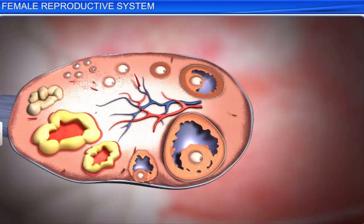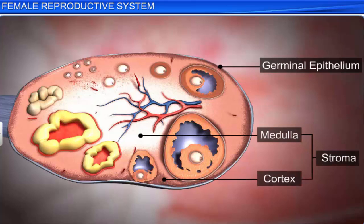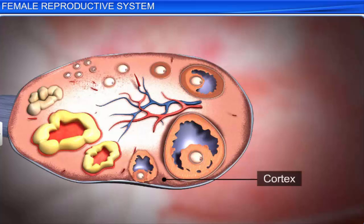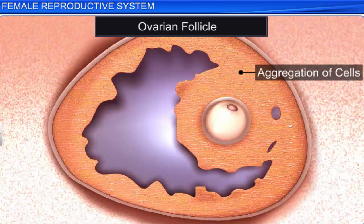Each ovary is covered by an outer thin layer called the germinal epithelium. The germinal epithelium encloses the ovarian stroma, which is further divided into the outer cortex and the inner medulla. The cortex consists of many ovarian follicles in different stages of development. The ovarian follicle is the basic unit of the female reproductive system, and is composed of roughly spherical aggregations of cells found in the ovary.